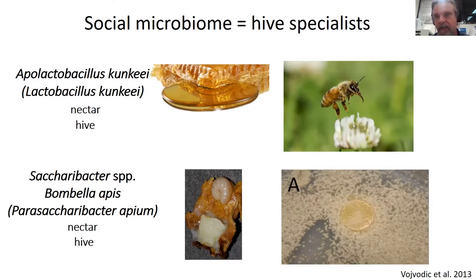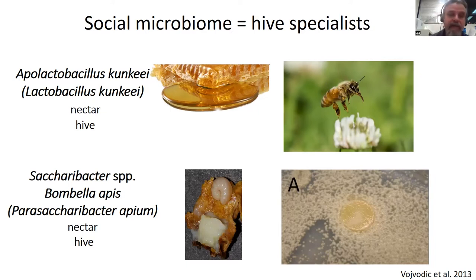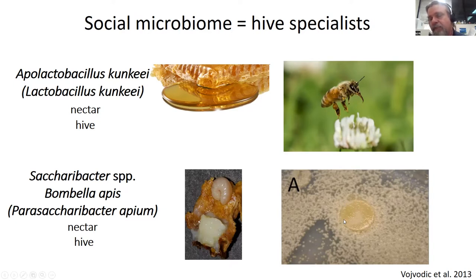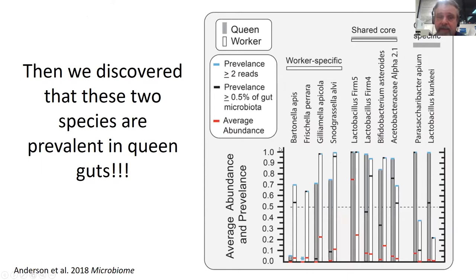A lot of the social microbiome members have evolved to survive in these substances. We found two major members early on — this is from work a postdoc in my lab, Voivodich, did back in 2013. We looked at species of Lactobacillus kunkeei, now called Apilactobacillus kunkeei, to see whether they could survive in concentrated honey and in concentrated royal jelly. Both survived well in hive environments if they had been sampled from the honeybee hive, but if they had been sampled from plants, they were greatly inhibited. Both of these are likely evolved as hive specialists.